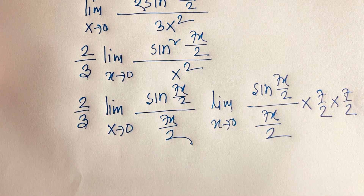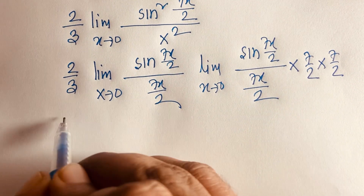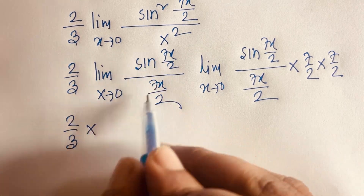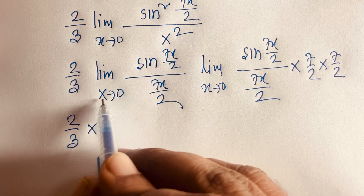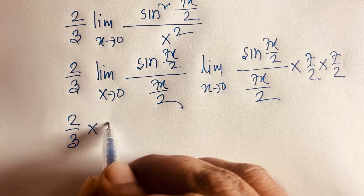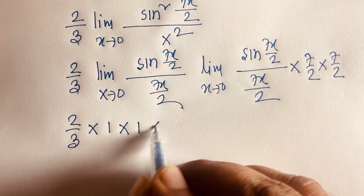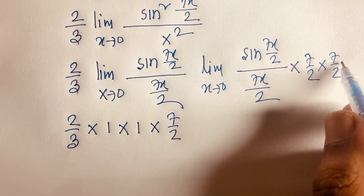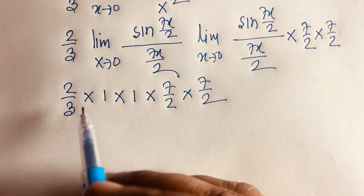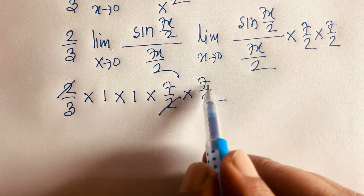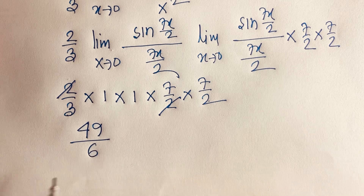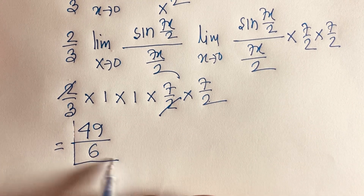This equation becomes 2 over 3 times (7/2) times (7/2), because according to the standard limit rule, limit x tends to 0 of sin x over x equals 1. So each sin(7x/2)/(7x/2) gives 1. Then the 2's cancel, 7 times 7 gives 49, and 49 over 3 times 2 equals 49 over 6. So our final answer is 49 over 6.